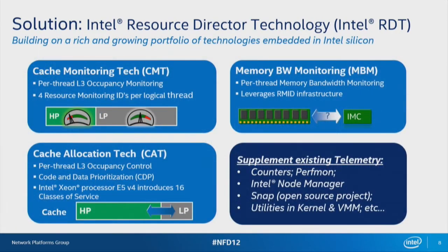The solution is RDT. RDT is being rolled out one piece at a time on different generations of CPUs. The first one was on V3 cache monitoring. Unless you can measure your problem, it's really hard to do anything about it. Previously we had counters that can measure cache misses on the system as a whole. But what you couldn't do is find out how much cache a given task running on the CPU was actually consuming — none of the perf counters would directly give you that number.